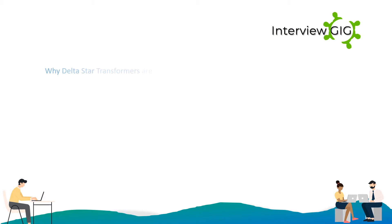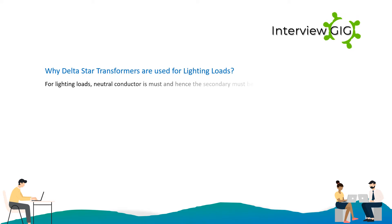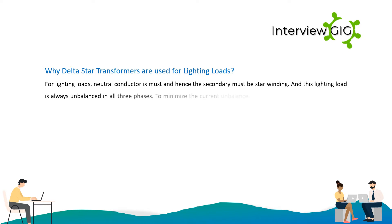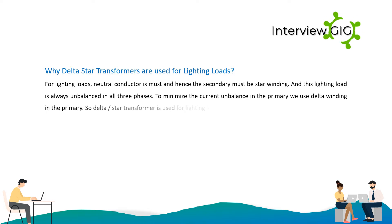Why are Delta Star Transformers used for lighting loads? For lighting loads, a neutral conductor is essential and hence the secondary must be a star winding. This lighting load is always unbalanced in all three phases. To minimize the current unbalance in the primary, we use delta winding in the primary. So Delta Star Transformer is used for lighting loads.